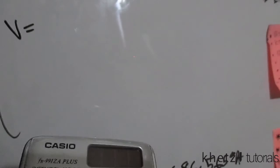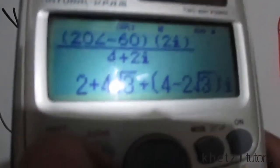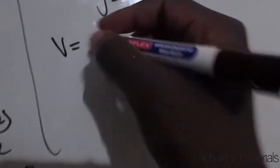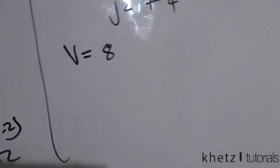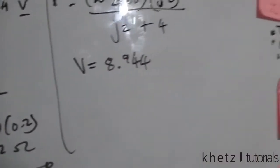We punch all of this into the calculator: 20 at an angle of negative 60 multiplied by 2j, then divided by 4 plus 2j. Transforming the result into polar form, the voltage is 8.944 at an angle of 3.435 degrees.